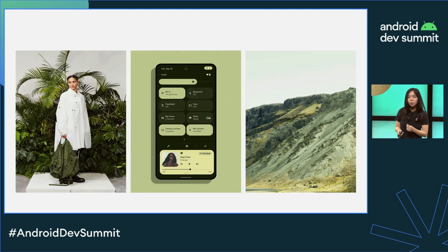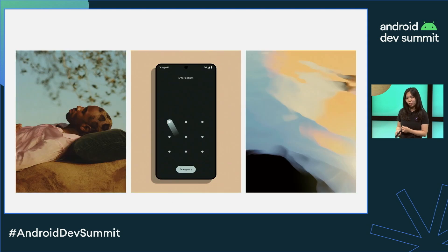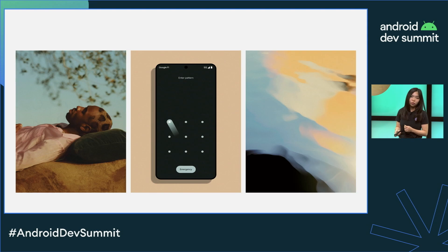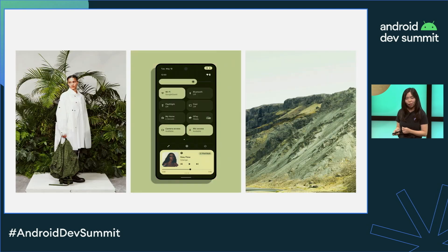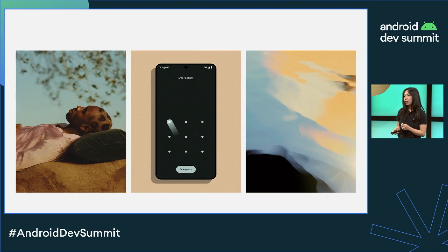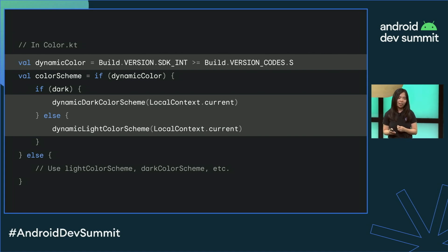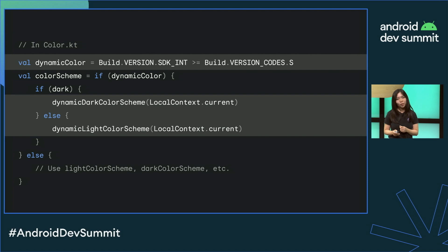Dynamic color is a key personalization feature of Material U. Starting with Android 12, users can generate individualized color schemes through wallpaper selection. To implement a dynamic color scheme in Compose, start by checking the build version SDK. If dynamic color is not available, we can fall back to using a light or dark color scheme as before.